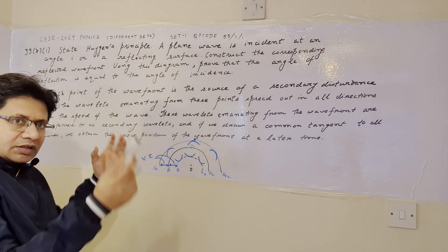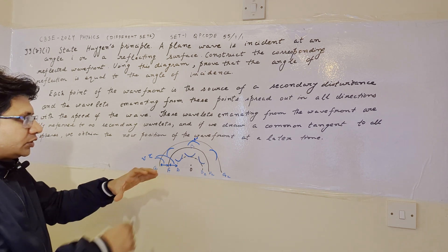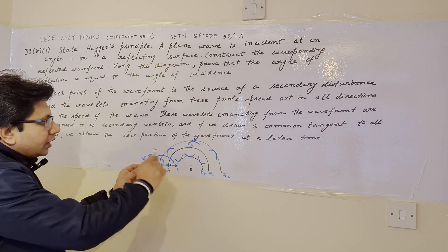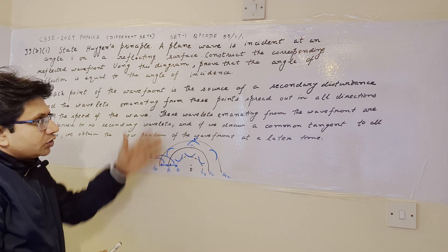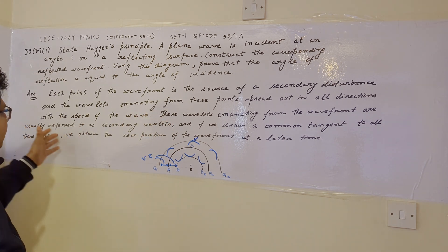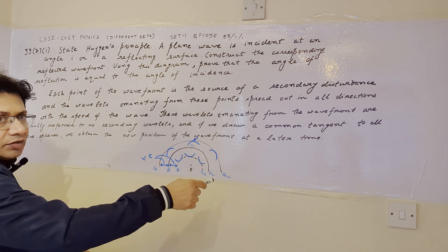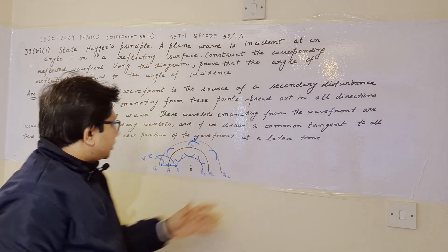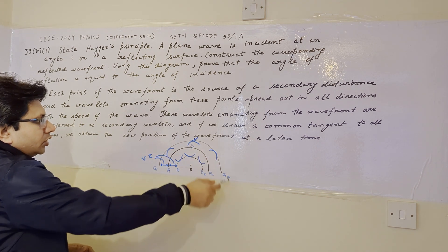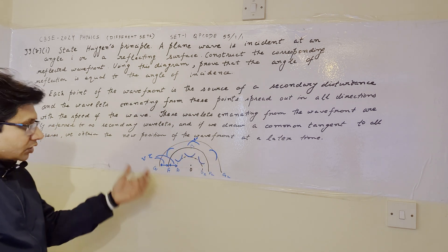The direction depends upon the nature of the source. If the source is isotropic, there is a spherical wavefront; if the source is linear, there is a linear wavefront. So the wavefront shape depends upon the nature of the source. Here, this is a point source generating a spherical wavefront. Each point generates secondary wavelets — these are referred to as secondary wavelets. Drawing a common tangent to all the spheres gives us the new position of the wavefront at a later time.